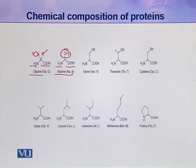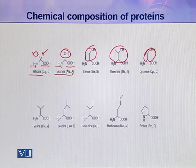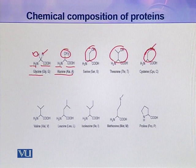Then there is serine, with its own R group, followed by threonine, which is a little bigger than the other amino acids. Then there is cysteine — in cysteine, sulfur is present in the R group, so cysteine is a sulfur-containing amino acid.